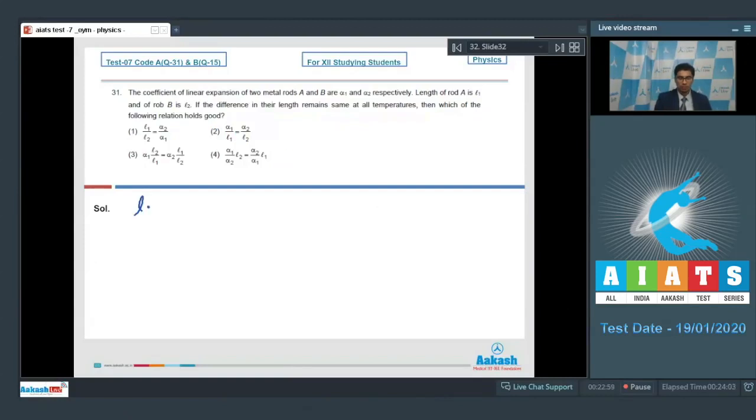For rod 1 we can write that L1 dash minus L1 would be equal to L1 alpha 1 delta theta. And for the second rod we can write L2 dash minus L2 would be equal to alpha 2 L2 into delta theta.